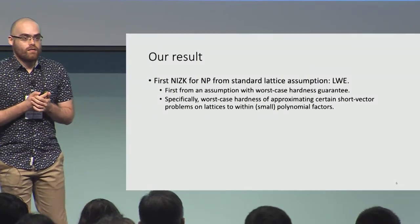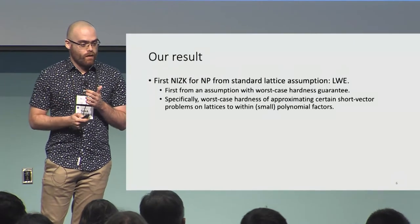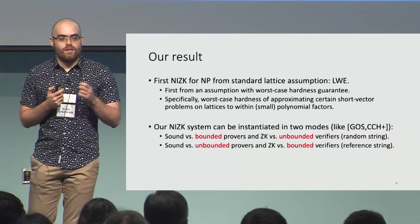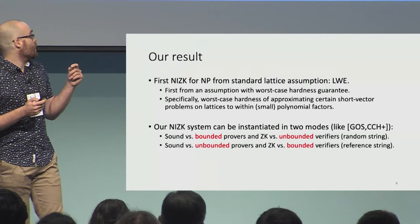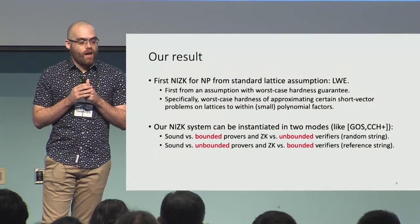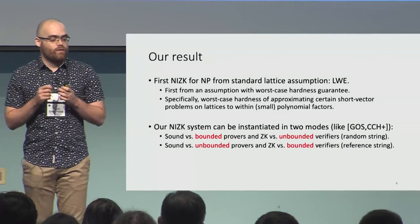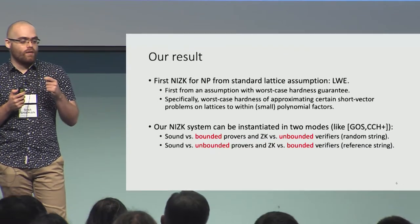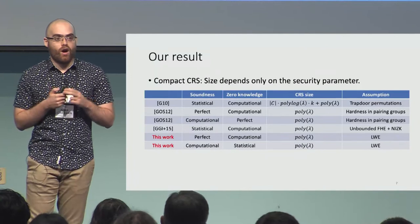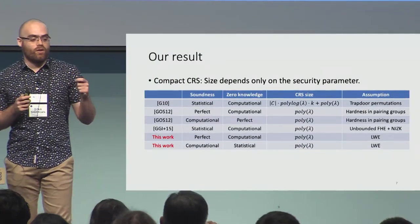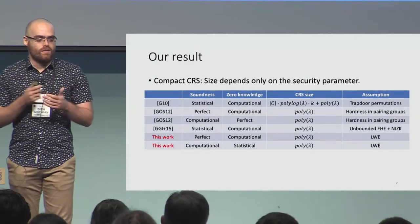Just like GOS and CCH+19, our NIZK system can be instantiated in two modes. In the first mode, the common random string model, we get a statistically zero-knowledge argument — sound against computationally bounded provers and zero-knowledge against computationally unbounded verifiers. In the second mode, the common reference string model, it is a computationally zero-knowledge proof, sound against unbounded provers and zero-knowledge against bounded verifiers. Furthermore, both instantiations have compact CRS, meaning the CRS size is just a polynomial in the security parameter, independent of the statement size, witness size, or the circuit verifying the NP relation.